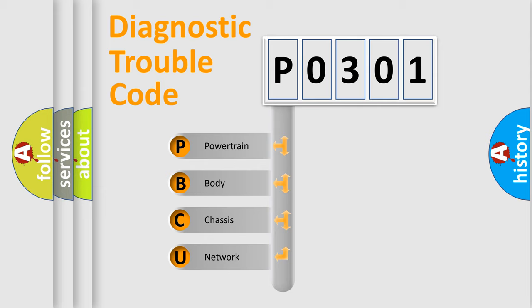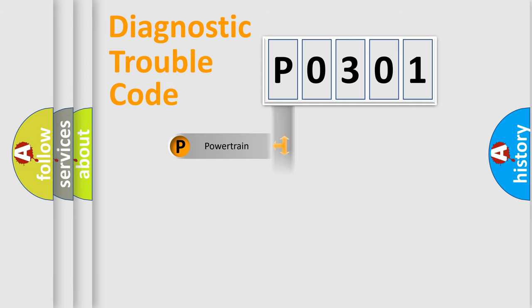We divide the electric system of automobiles into four basic units: powertrain, body, chassis, and network.